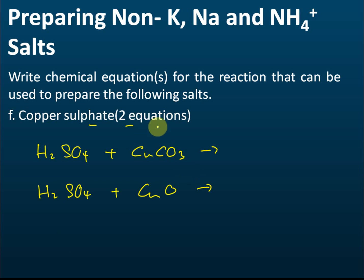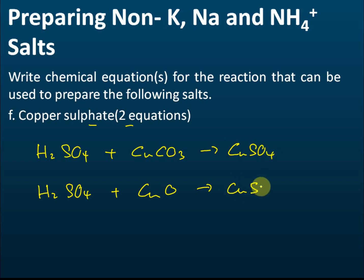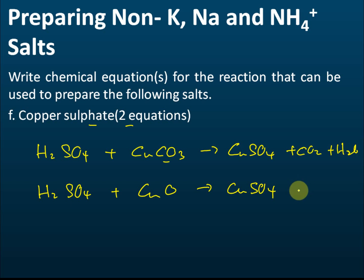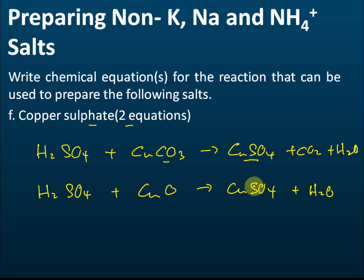Therefore there are only two valid reactions for preparing copper sulfate. CuCO₃ + H₂SO₄ → CuSO₄ + CO₂ + H₂O, and CuO + H₂SO₄ → CuSO₄ + H₂O. Both equations are already balanced. That's how we prepare copper(II) sulfate.